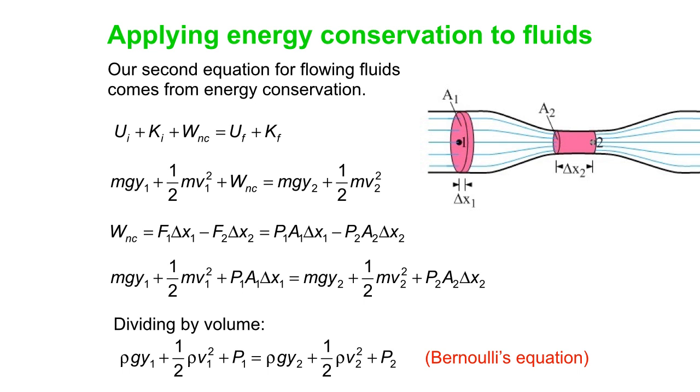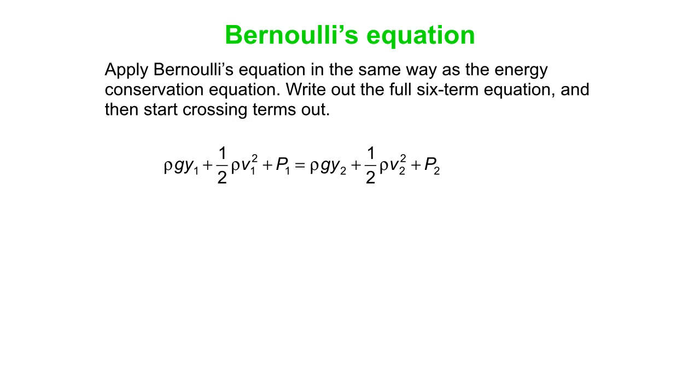So how do we think about this? Well, we apply Bernoulli's in the same way as our energy conservation equation, our five-term equation, but this is now a six-term equation, so we simply write it down and then start crossing terms out just like we did with the five-term energy equation. But it's a great way to relate heights and speeds and pressures at two different places inside a flowing fluid. So that's a good introduction to fluid dynamics. Thanks.